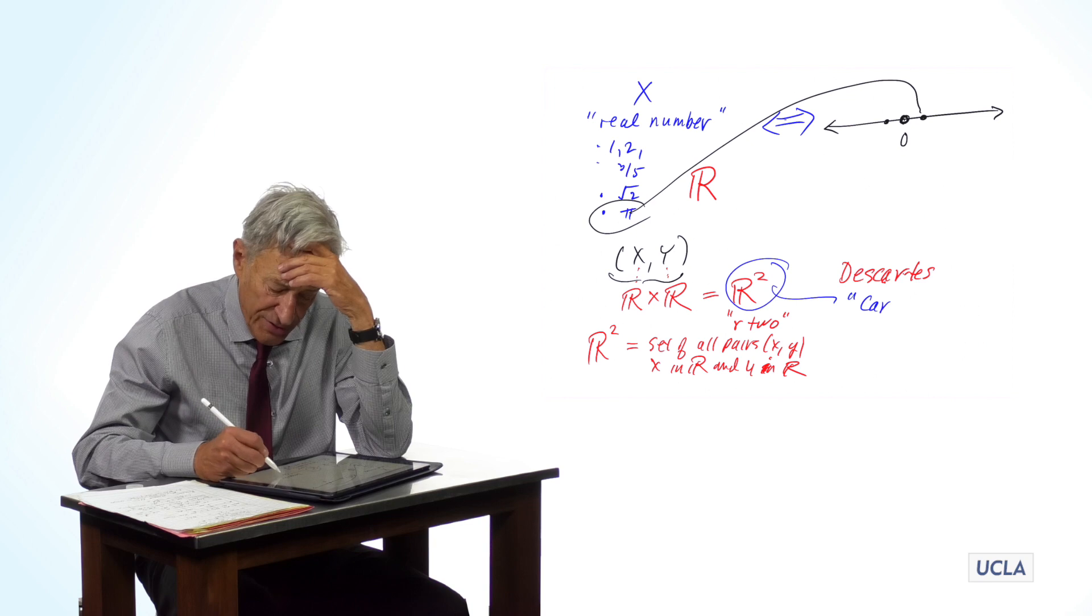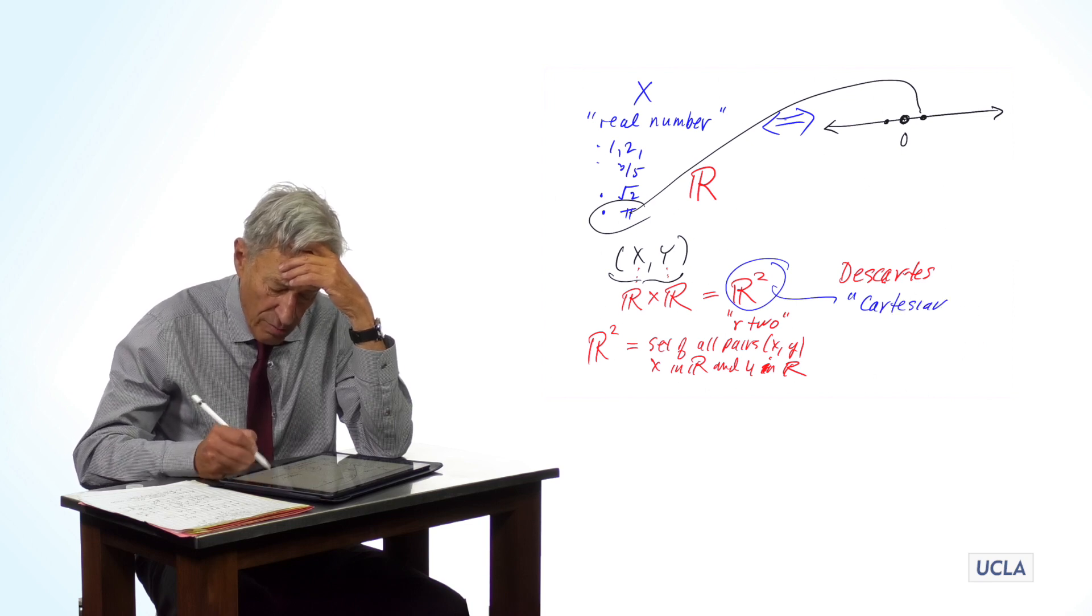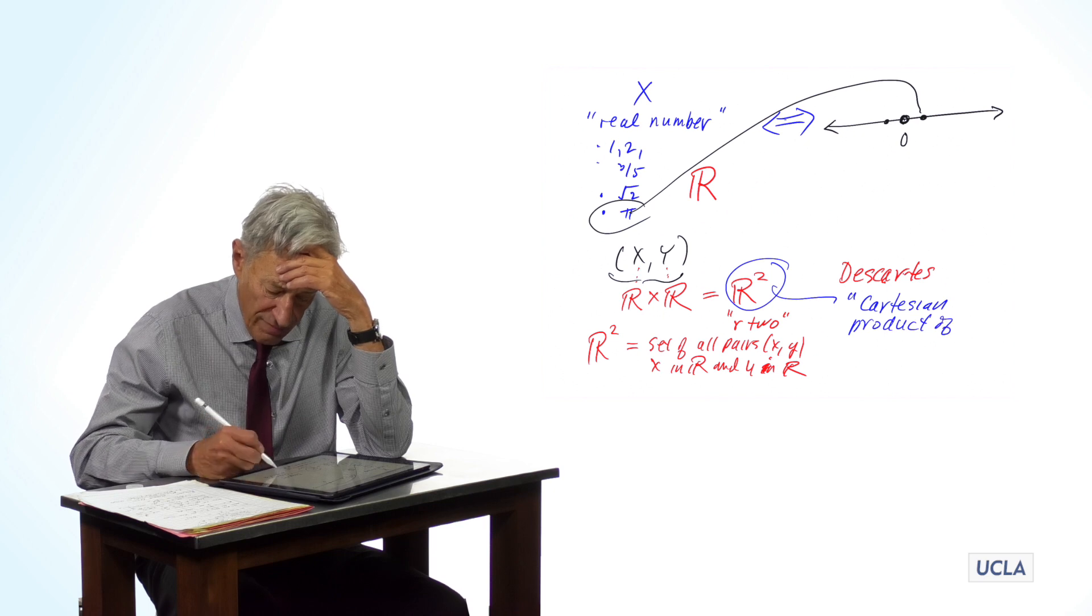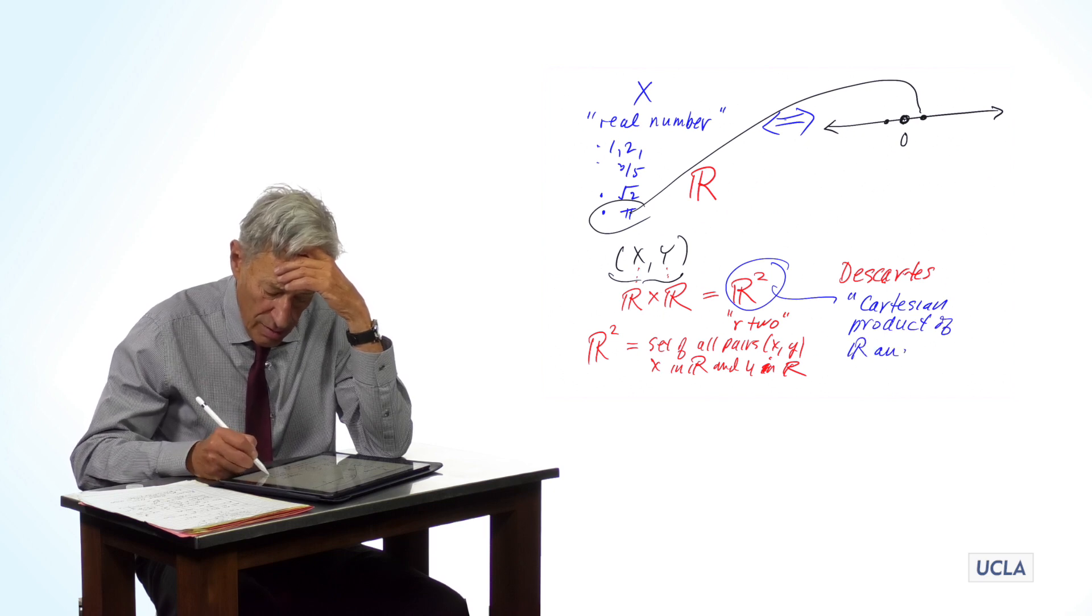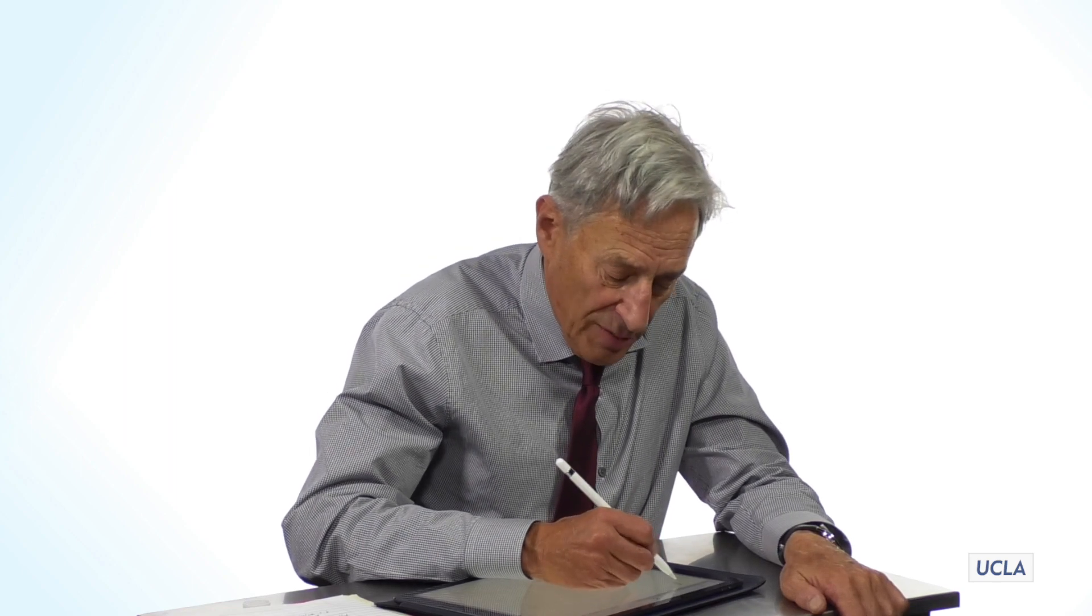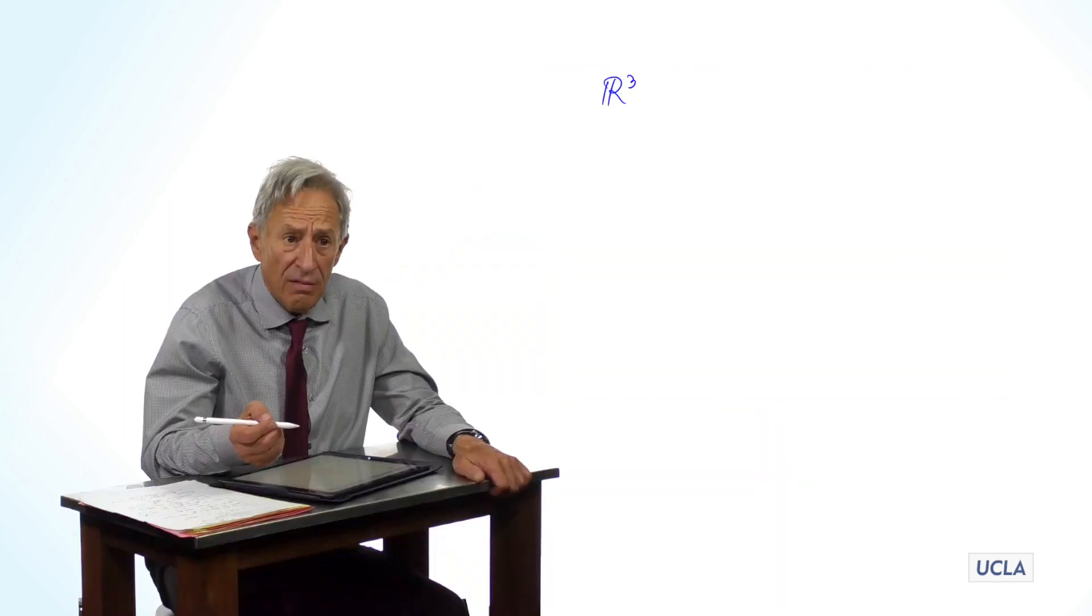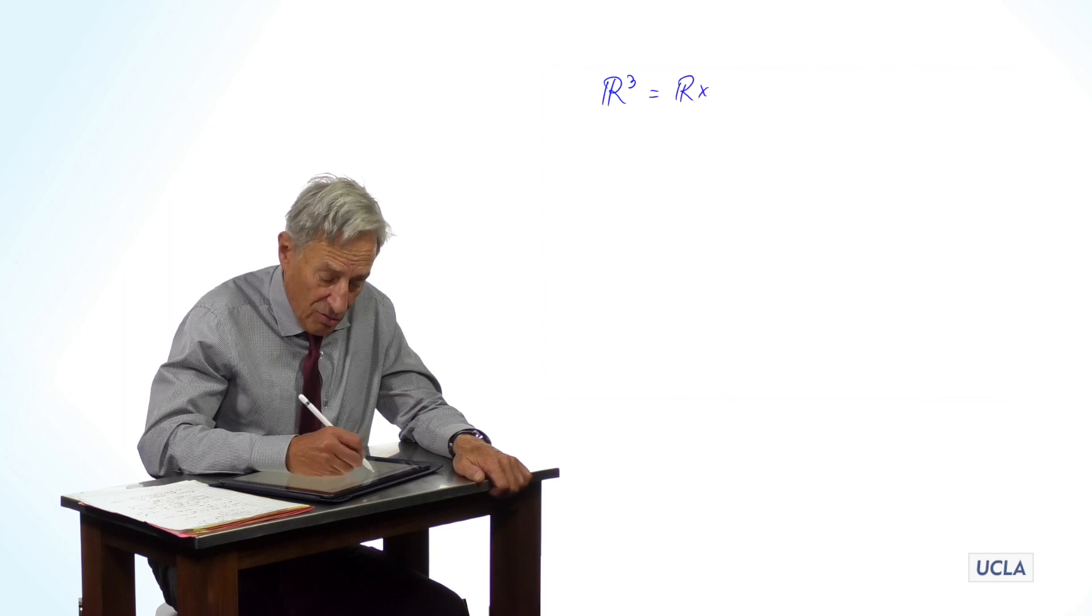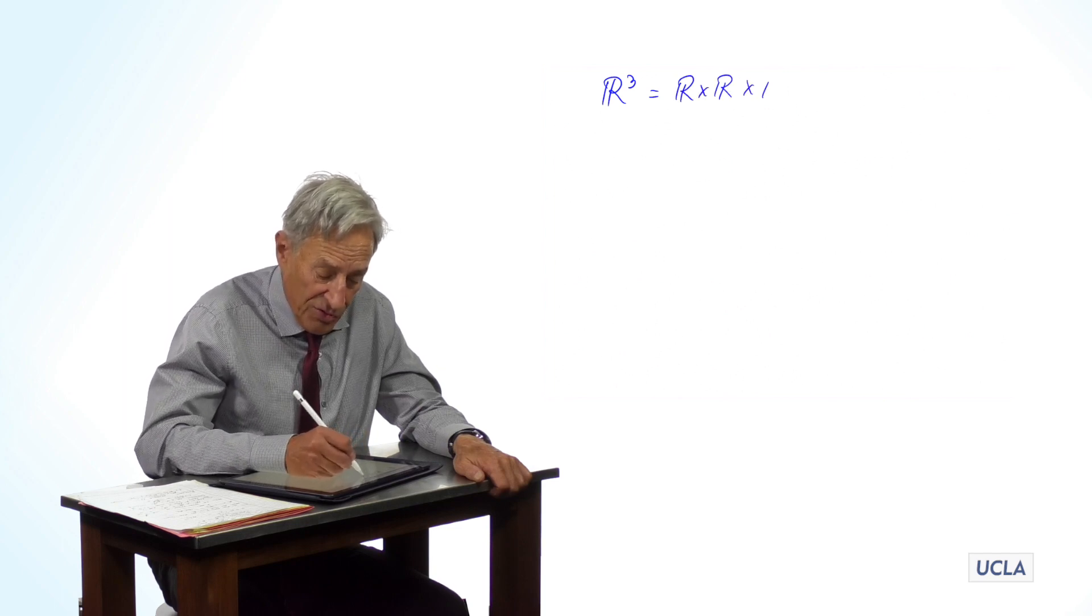is called the Cartesian product of R and R. Now that we have that, it's of course very easy and natural now to talk about R3,